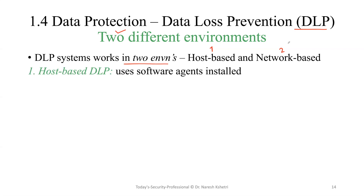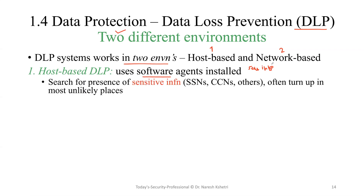The first one is the host-based DLP, also known as host-based data loss prevention. It uses software agents installed on systems that search those systems for the presence of sensitive information. These software agents search for sensitive information such as social security numbers, credit card numbers, and other sensitive information that often turns up in the most unlikely places.